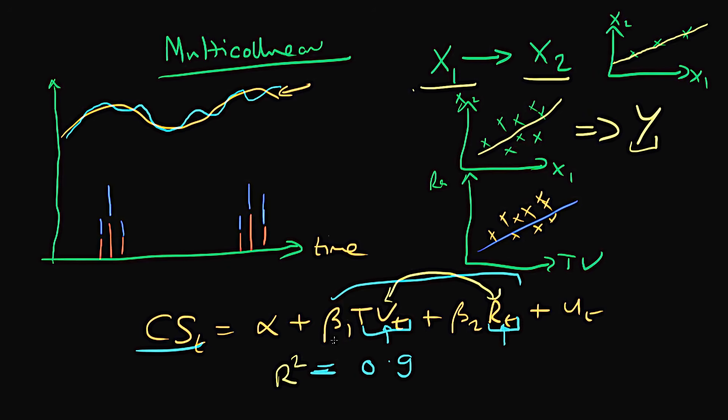But the intuition is that essentially if I include both of these things in my model, my beta 1 and beta 2 are going to have these huge standard errors because these two things are so collinear with one another, which means it's going to be very difficult to determine accurately what the effect of TV advertising is and what the effect of radio advertising is.